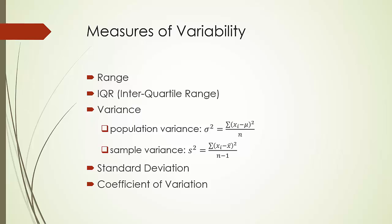Sometimes we may also say that we lose one degree of freedom for estimating the population mean. One weakness of variance is that extreme values have a much larger effect on variance due to the squaring. That's why sometimes people use absolute deviation rather than squared deviation. But there are some technical challenges when using absolute deviation to measure variability, which is why we don't see it used very often. So we will just focus on squared deviation and many other measures derived from it.